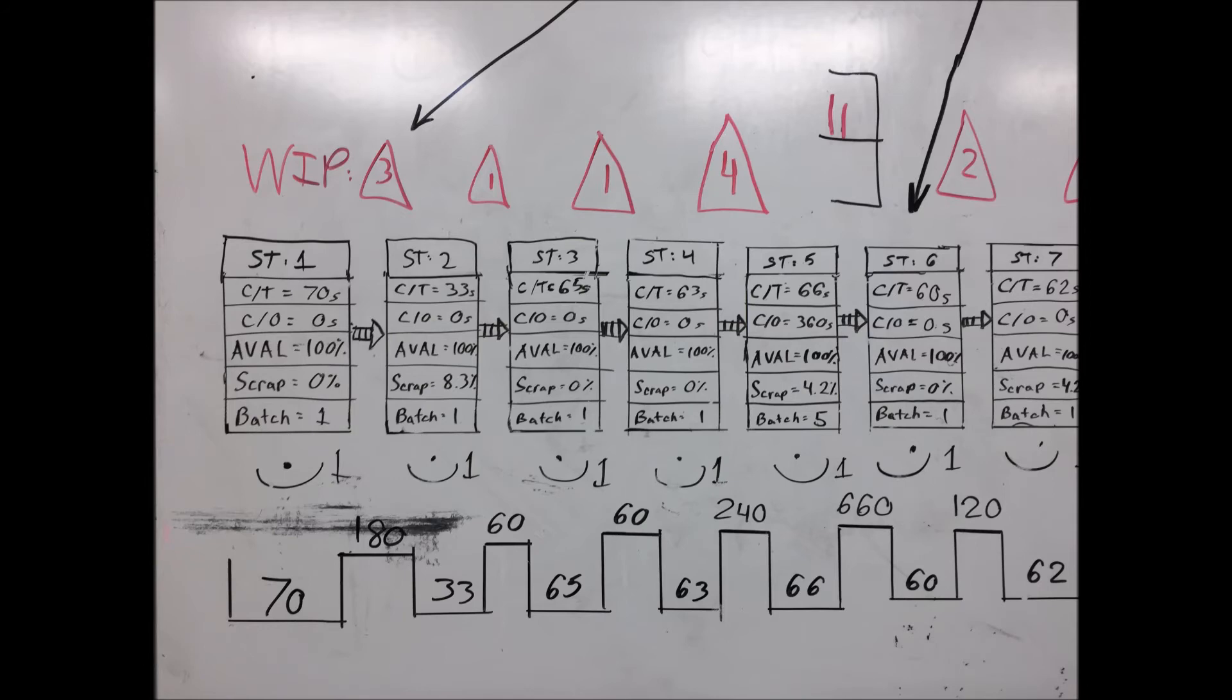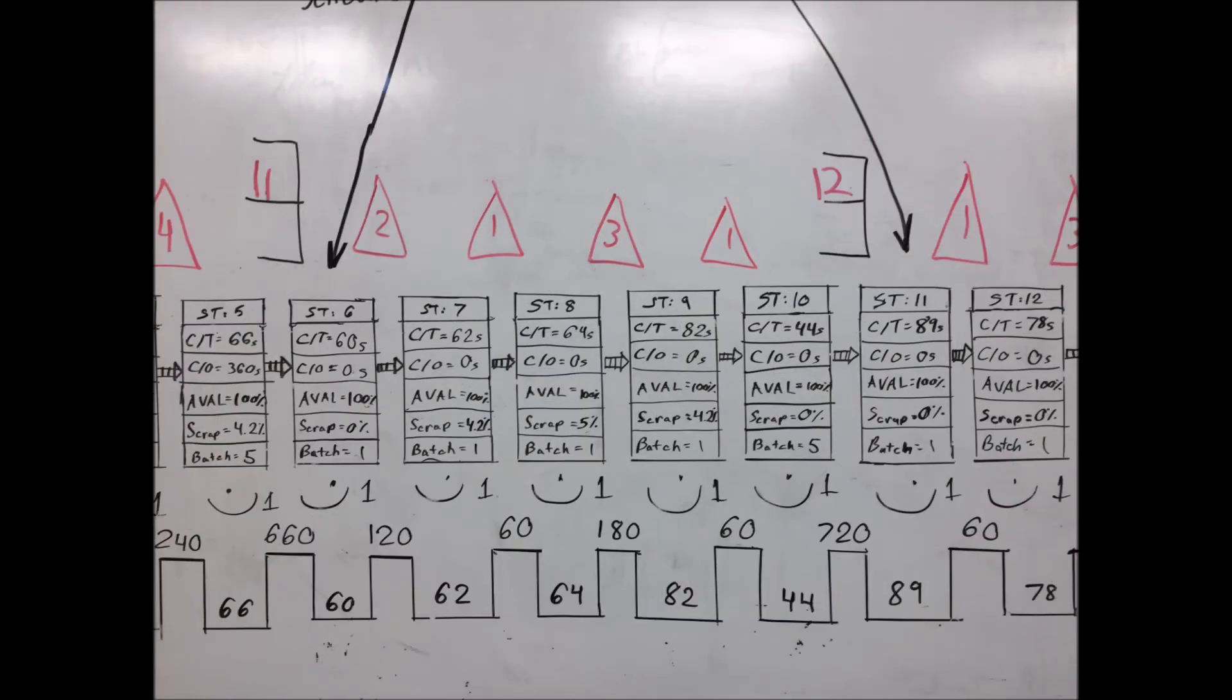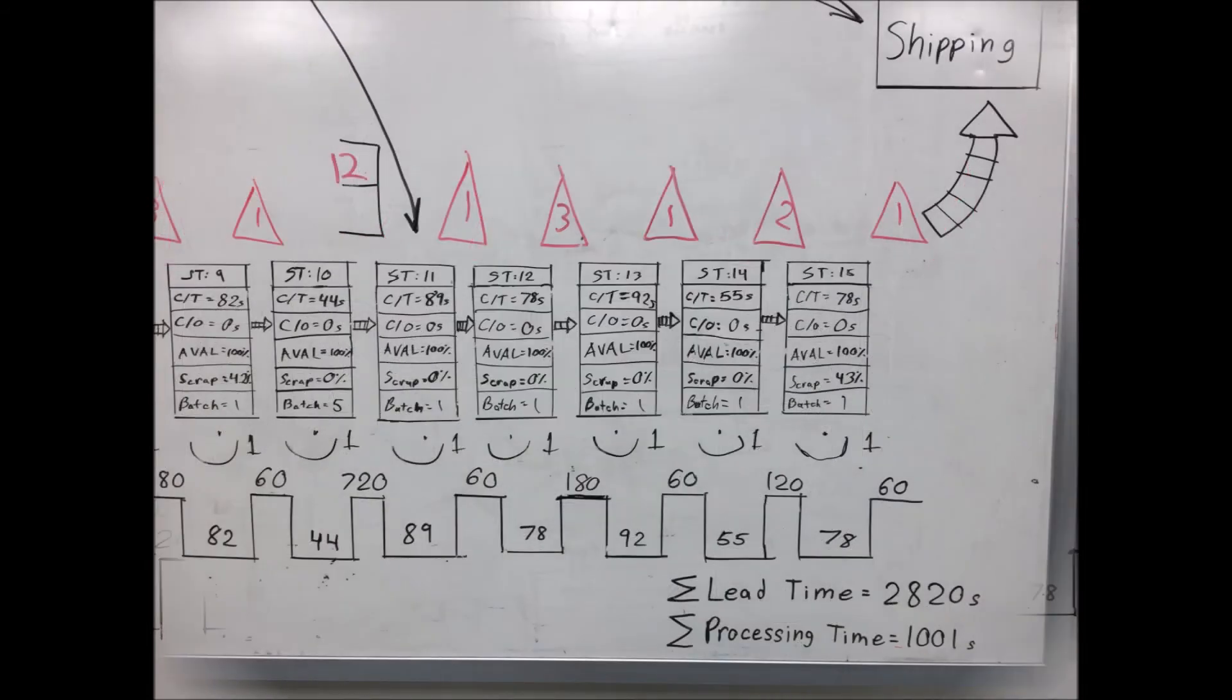Beneath each processing box, write the box's processing time. Beneath each inventory triangle, write the WIP multiplied by the takt time. Finally, sum the processing times to find the total processing time and sum the inventory times to find the lead time for the system.